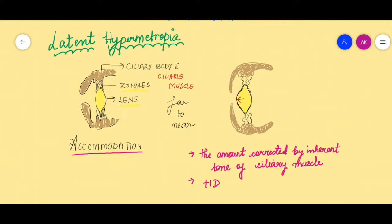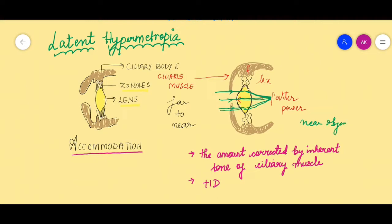the ciliary muscle undergoes contraction. As the ciliary muscle contracts, the zonules connecting the ciliary body to the lens will undergo relaxation and become lax. Because of the laxity of the zonules, the lens is now free to move anteriorly — it can bulge forward. As the lens bulges forward, it tends to become somewhat fatter, and therefore the power of the lens increases, focusing light rays further forward. This principle helps you see near objects, and this is called accommodation.